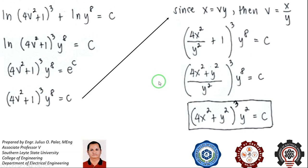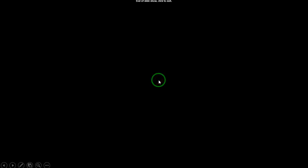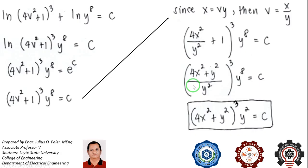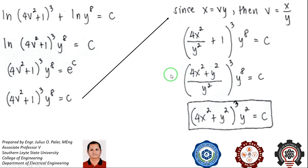This confirms that you can use either substitution — x equal to vy or y equal to vx — for any homogeneous differential equation. You need not show both solutions, but doing so is a good way to check your answer. That concludes the solution of our first example. We will solve the next example in the next video. Thank you very much and good day.